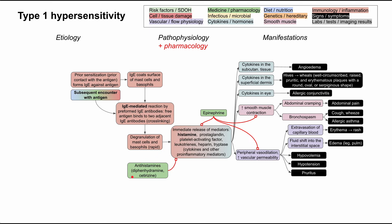Another set of drugs, not first line but used in conjunction with epinephrine, are antihistamines. This includes first-generation antihistamines like diphenhydramine (Benadryl), as well as second-generation antihistamines like cetirizine and loratadine. These directly affect the H1 histamine receptor and block the downstream effects of histamine. However, they don't work as well as epinephrine, so epinephrine remains first line.